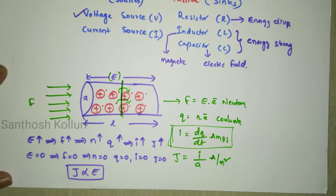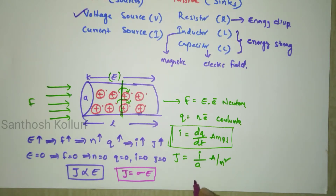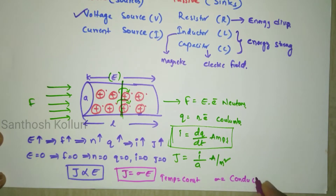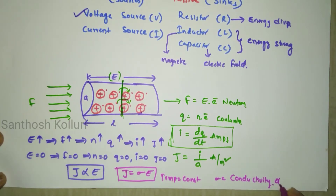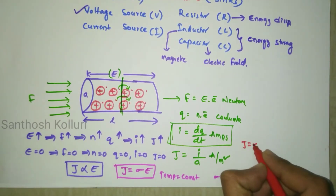This can be written as J is equal to sigma E. The current density is directly proportional to the electric field intensity, where sigma is the conductivity of the material, keeping the temperature constant. This relation J equals sigma E is called Ohm's law for field theory.